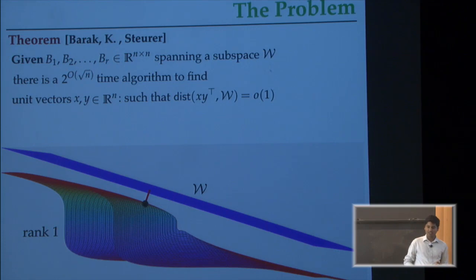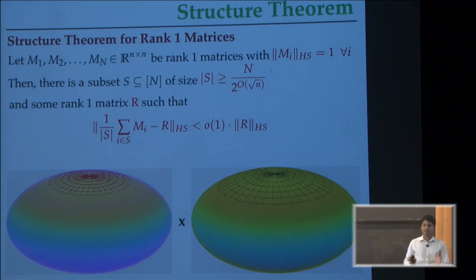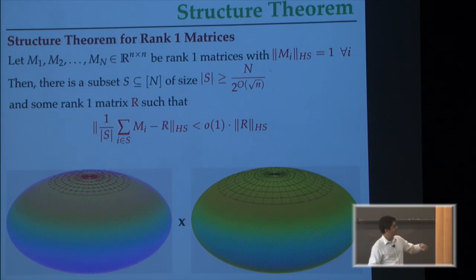Now I'm going to tell you about what is the structural fact about rank 1 matrices that we actually use to prove this theorem. I'm going to call it the structure theorem for rank 1 matrices. It's some structural fact about this space that is not true for general n by n matrices. Here's the claim: Suppose you have an arbitrary collection of capital N small n by small n dimensional matrices which are all rank 1. Suppose they're all normalized to have their Frobenius or Hilbert-Schmidt norm set to 1. This can be a completely arbitrary collection. To get your expectations right, I'm thinking of capital N which is really large - like 2^O(n) for this result to make sense.